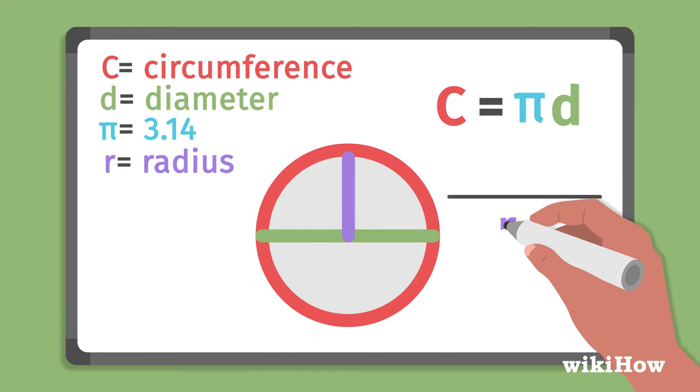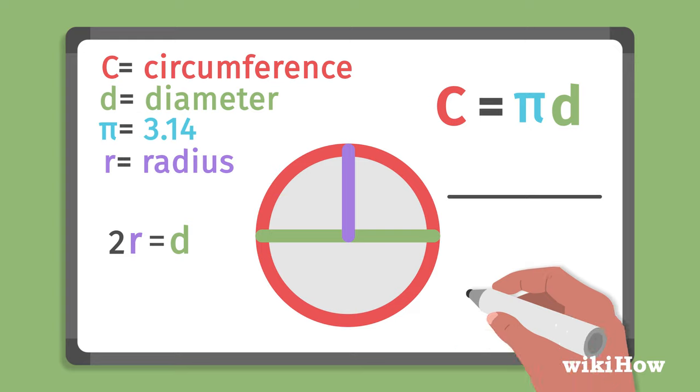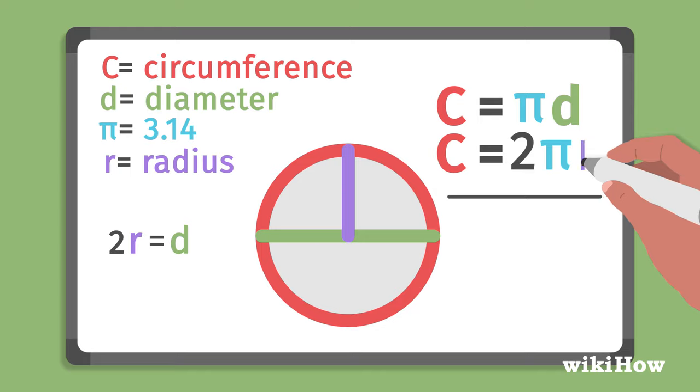If you have the radius instead of the diameter, multiply it by 2 to get the diameter. You can also use the formula for the circumference of a circle using the radius, which is C equals 2 pi r,